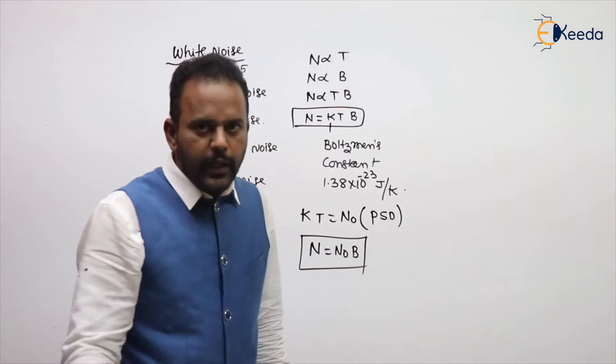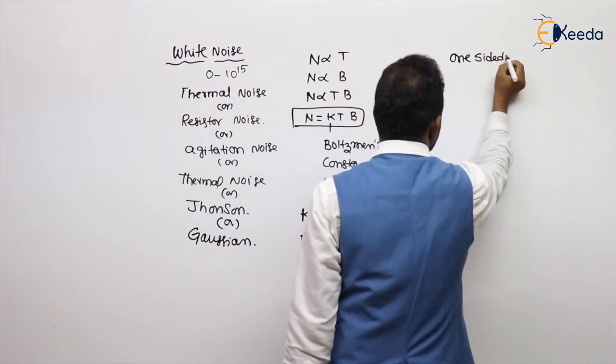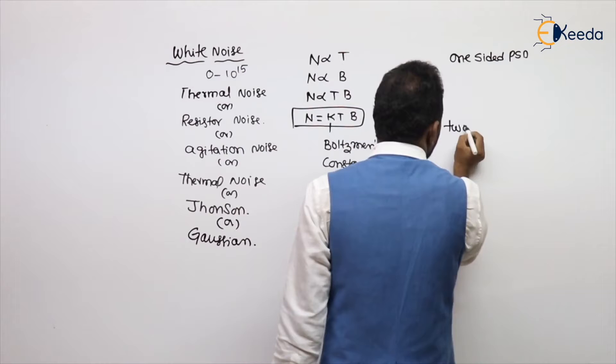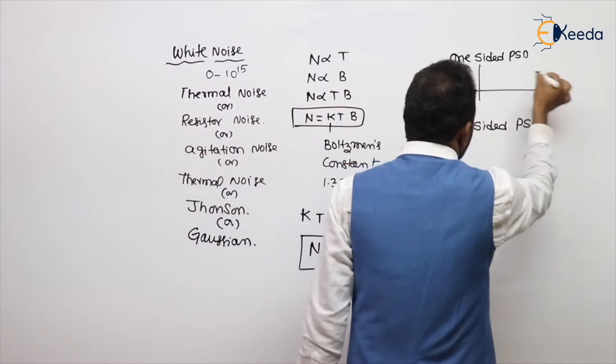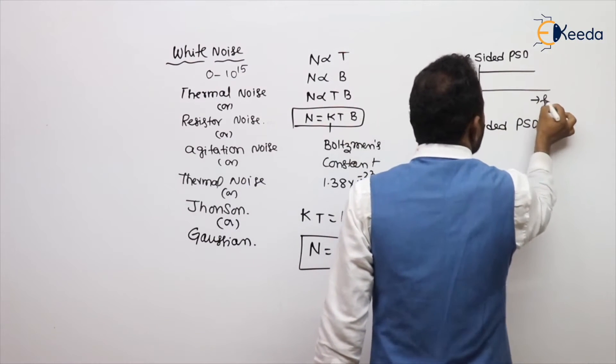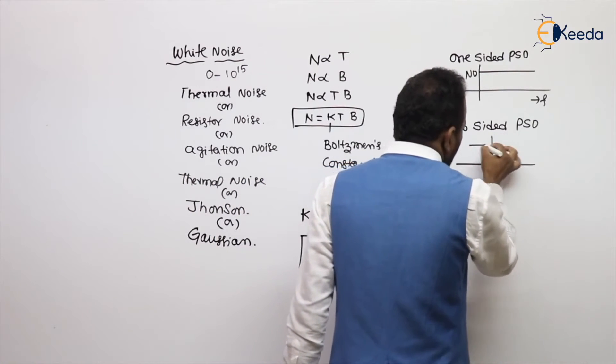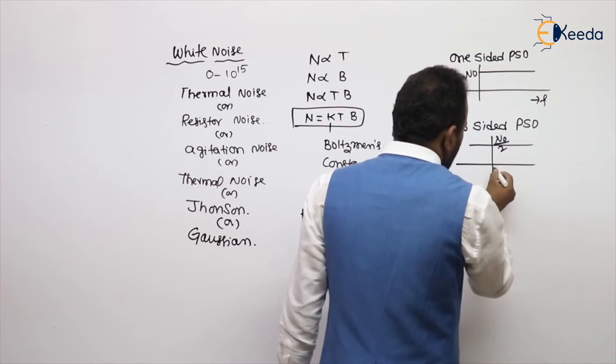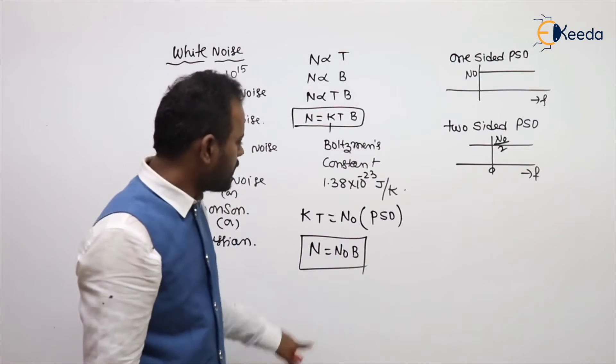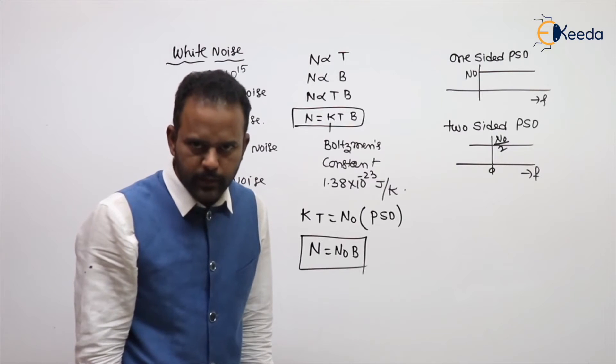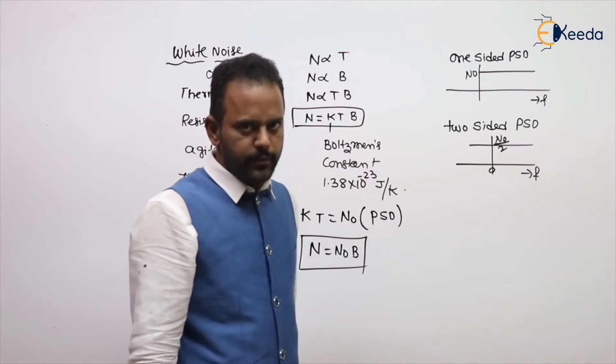In the exam, N0 is called power spectral density. In the problems, there are two words they will regularly use: one-sided PSD and two-sided PSD. One-sided PSD meaning is the given value is N0. So directly given value is N0, you can calculate noise power. If they said two-sided PSD, the given value itself is N0 by 2. From N0 by 2, calculate N0 and calculate the noise power. Clear? They are saying two-sided means given value is N0 by 2, one-sided means given value is N0.